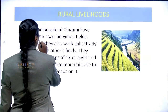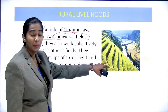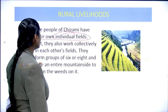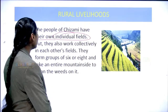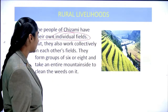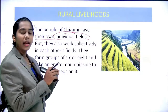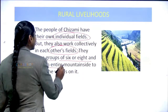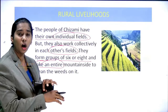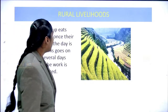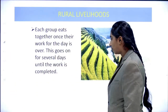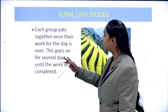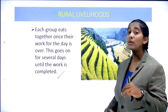The people of Chizami have their own individual fields but also work collectively in each other's fields. They form groups of 6 to 8 and take an entire mountainside to clear the weeds. Each group eats together once their work for the day is over, and this goes on for several days until the work is completed.